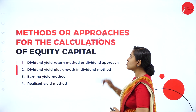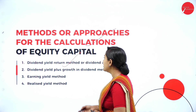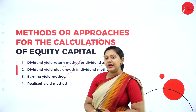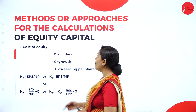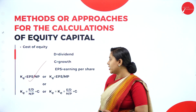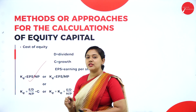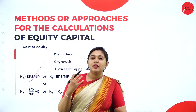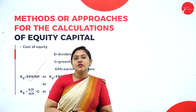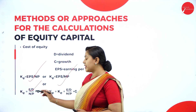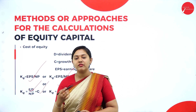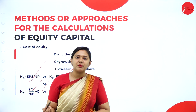Methods for calculating cost of equity include: the dividend yield return method or dividend approach, dividend yield plus growth in dividend method, earnings yield method, and realized yield method. The formula is: Cost of Equity = EPS / Net Proceeds, or Cost of Equity = EPS / Market Price. If growth is given, the formula becomes: Dividend (or Earnings) / Net Proceeds + Growth, or Earnings / Market Price + Growth. You substitute based on what is given in the question.